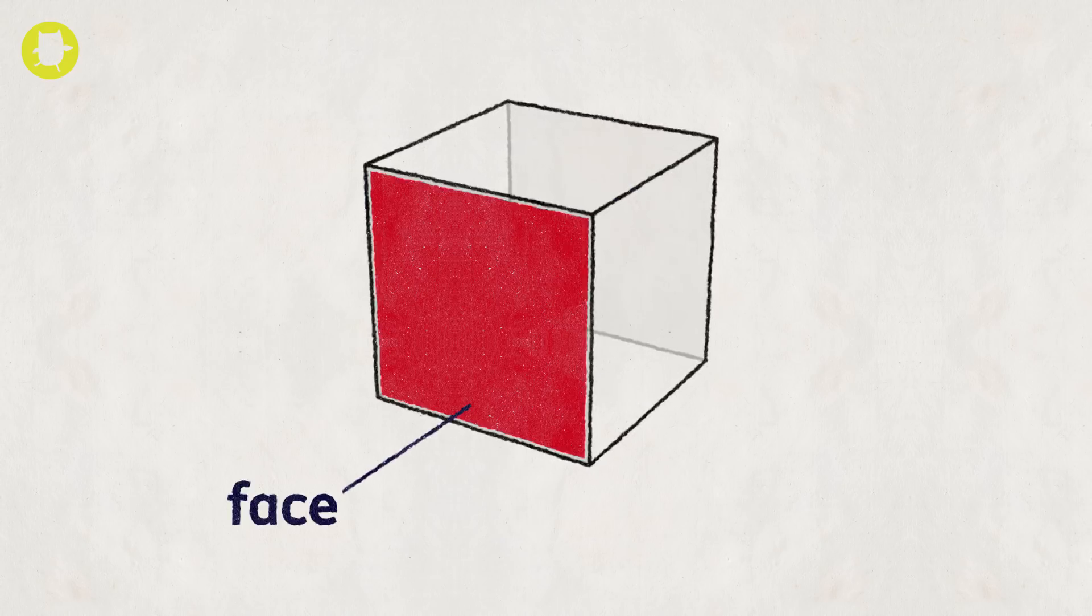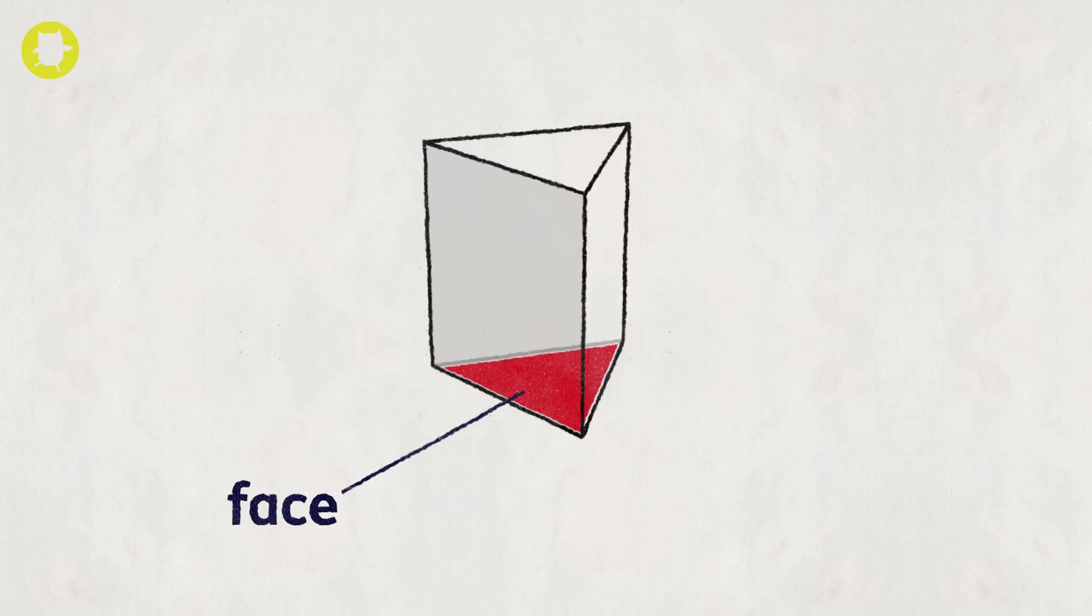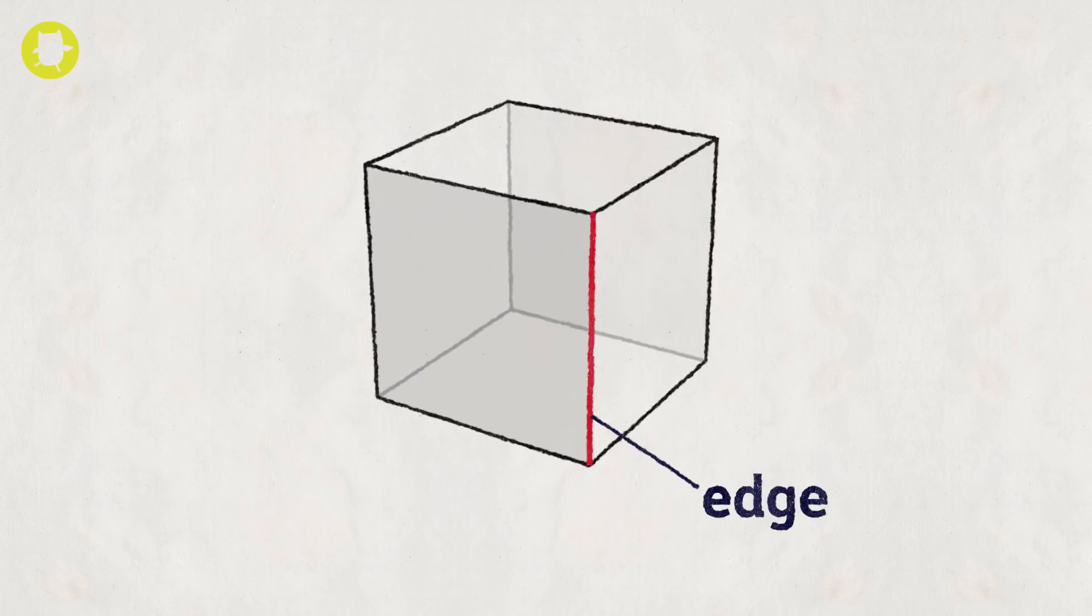A face is a flat surface of a solid shape. The base of a shape is also a face. The edge of a shape is where two faces meet. An edge can be straight or curved.